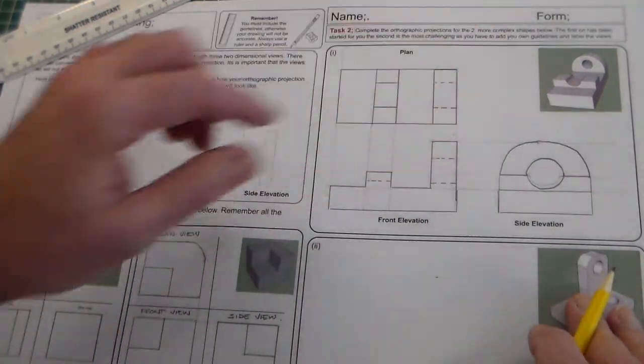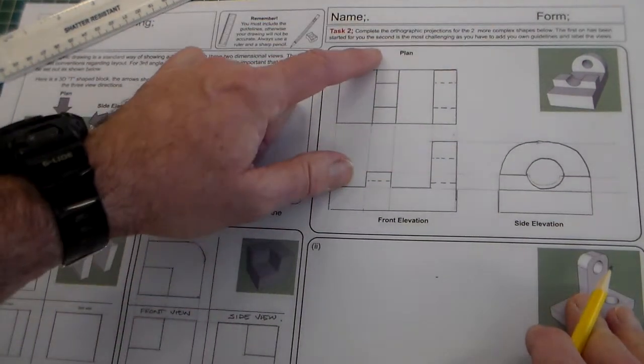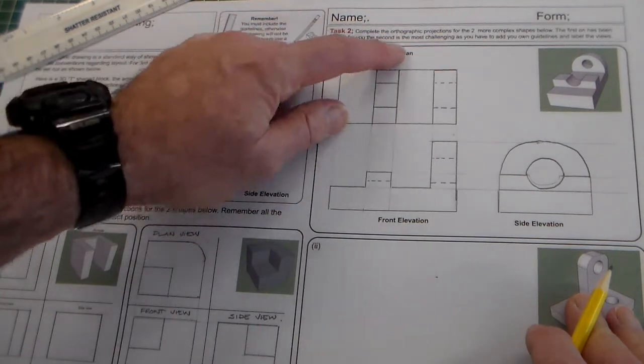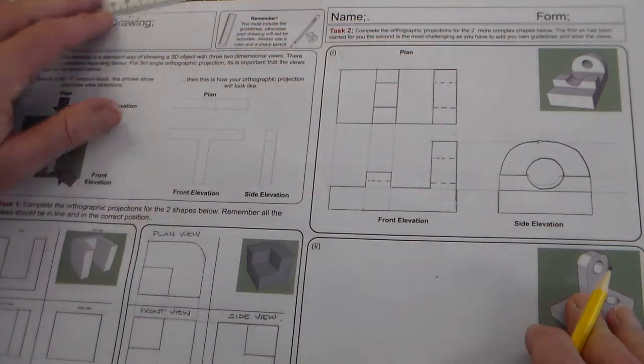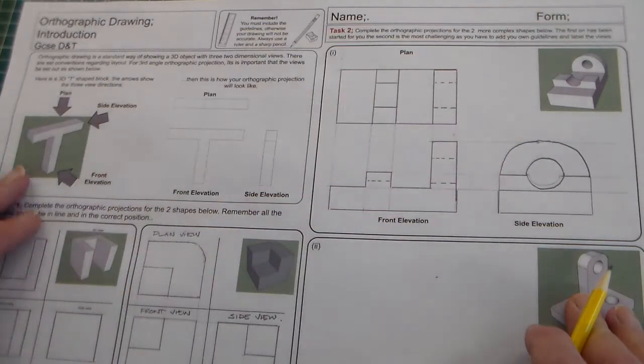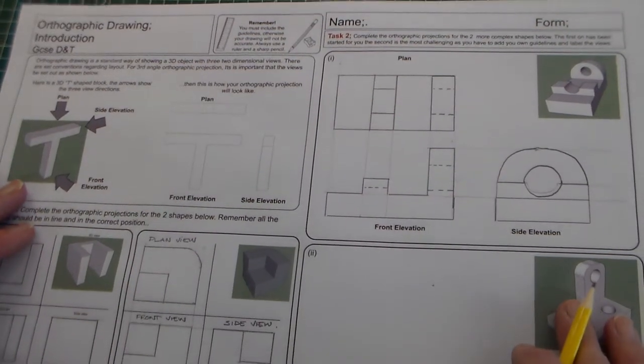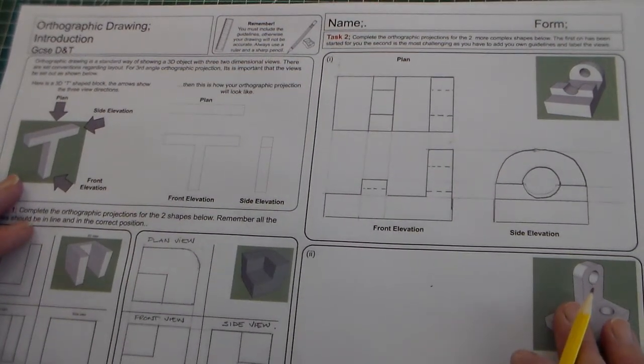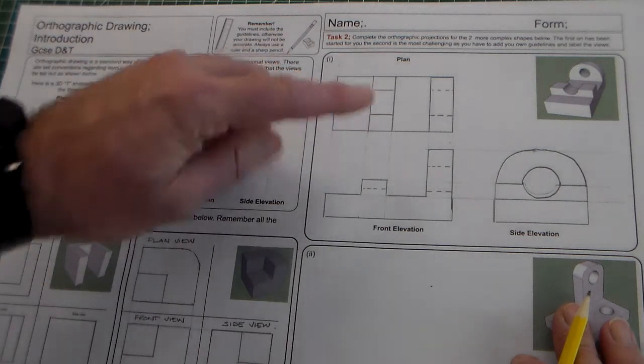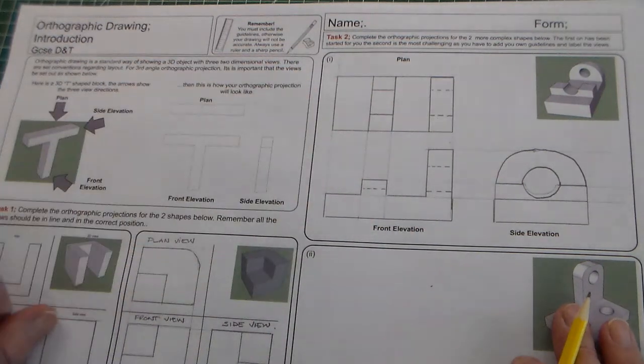With some objects like this, your interpretation of which is the plan, the front elevation, the side elevation can be difficult because they're not obvious. But there's task two for the orthographic drawing introduction with a plan view, a front elevation and a side view.